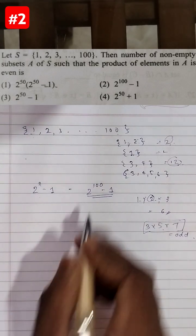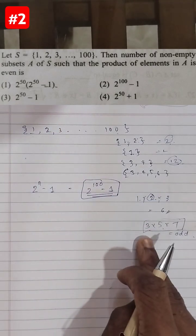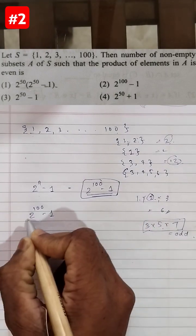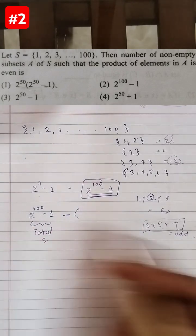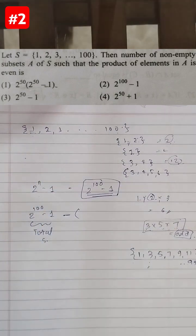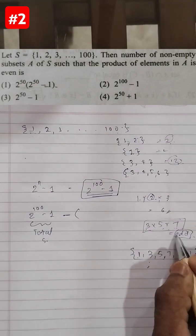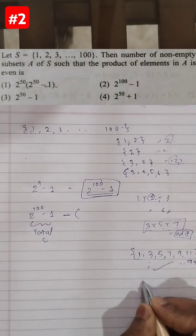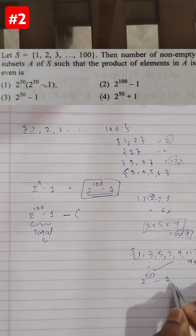We know the total number of subsets of this set is 2 raised to 100 minus 1, and we want to subtract from this the number of subsets in which the product is odd. The odd-product subsets must consist only of odd numbers from 1 to 100. There are 50 odd numbers in that range, so the number of such subsets is 2 raised to 50 minus 1.